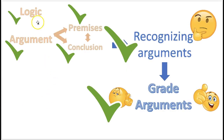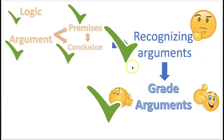Let's take a quick quiz and a recap. What is logic? It's the science used to evaluate arguments, and an argument is when somebody's trying to prove a point. Arguments contain premises, which is evidence that leads to the point that the person is trying to prove, and the conclusion is the point that the person is trying to prove. You know how to recognize an argument — look for indicator words to find the premise and conclusion. If it has a premise and a conclusion, it's an argument.